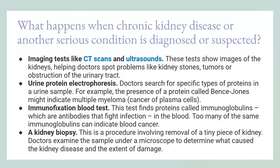Imaging tests like CT scans and ultrasounds show images of the kidneys to identify problems such as kidney stones, tumors formed by accumulation of abnormal cells, and obstruction of the urinary tract. Urine protein electrophoresis allows doctors to search for specific proteins in the urine, such as proteins that cause cancer in plasma cells. An immunofixation blood test finds proteins called immunoglobulins — antibodies that fight infection — too many of which can cause blood cancer. A kidney biopsy involves removal of a tiny piece of kidney to be examined under a microscope to determine the cause of the kidney disease.